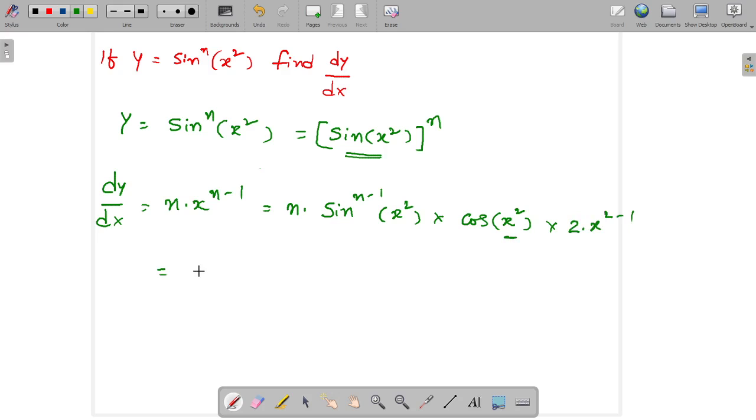So finally, n into sin to the power n minus 1 of x squared, into cos of x squared, into 2x.